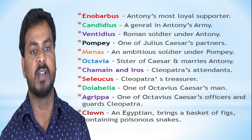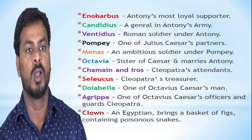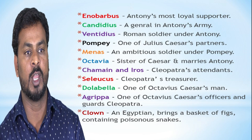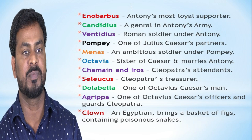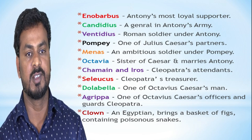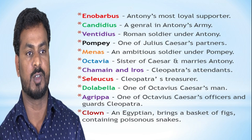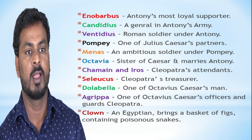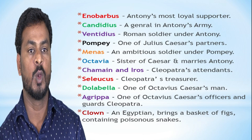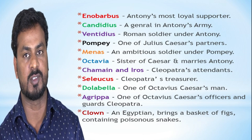Soros is Cleopatra's treasurer. Dolabella is one of Octavius Caesar's men who always pursued Cleopatra. Agrippa is one of Octavius Caesar's officers and served in the army. The Clown is an Egyptian who brings a basket of figs containing poisonous snakes.